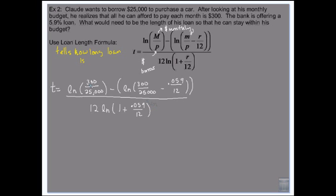All over 12 times the natural log of 1 plus the rate divided by 12. So here's what you have to do. We have to do all this division first. So all these fractions, we're going to divide those first. So I get the natural log of 0.012 minus the natural log of... When you do this 300 over 25,000 minus 0.059 over 12, it equals 0.00708. So that's where this number comes from.